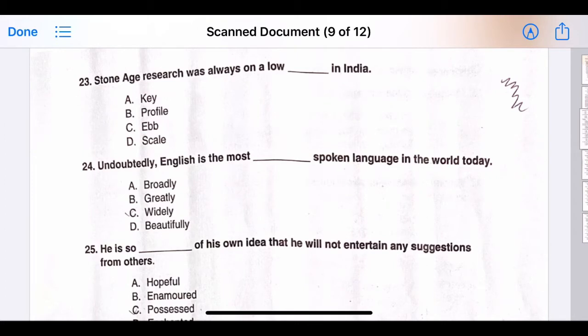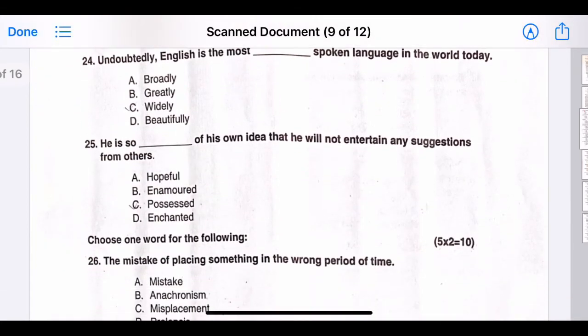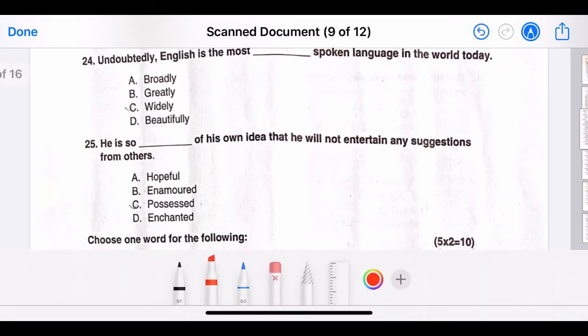Twenty-three, Stone Age research was always on a low blank in India. The correct answer is option A, key. Twenty-four, undoubtedly, English is the most blank spoken language in the world today. The correct answer is option C, widely.